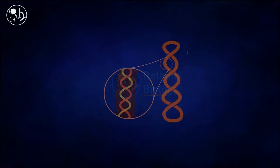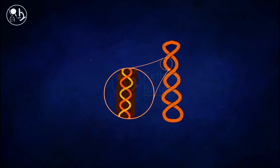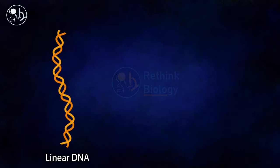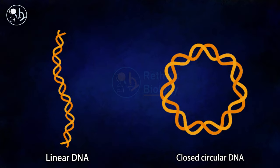DNA topology refers to the super helical structures or tangles in the DNA double helix. There are generally two forms of DNA: linear DNA and closed circular DNA.